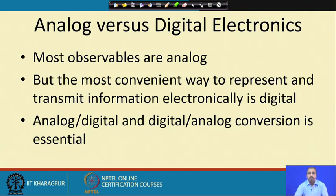The observed values are analog in nature. But the most convenient way to represent and transmit information electronically is digital. Once you have it in digital format, the transmission becomes easy from our electronic devices. We are normally going for digital designs — why this is so, we will try to explain in this course.